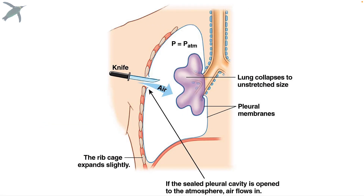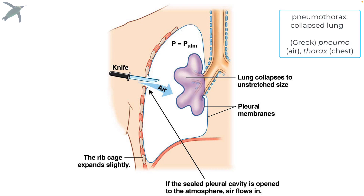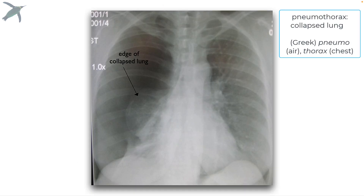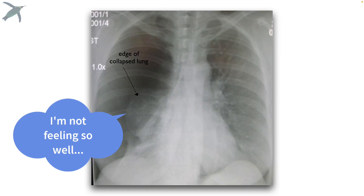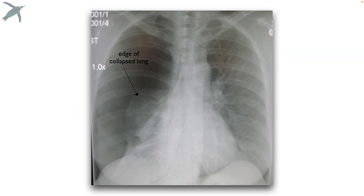They're not connected. And if you get a knife through the thoracic wall, the lung will collapse as air moves from areas of high pressure to areas of low pressure. This results in what's called a pneumothorax, which just means air in the thorax. But the other lung is not affected, because each lung is surrounded by its own pleural membranes.